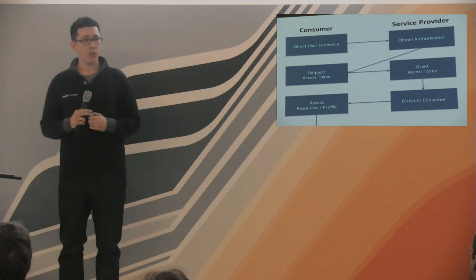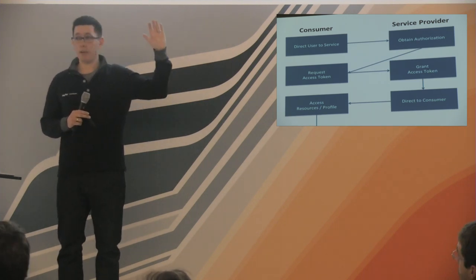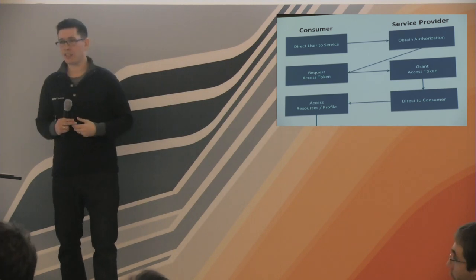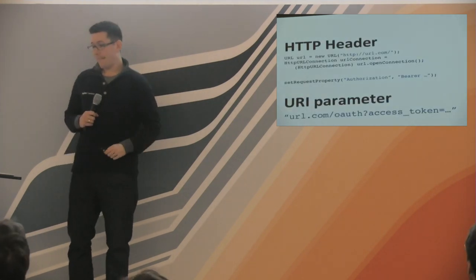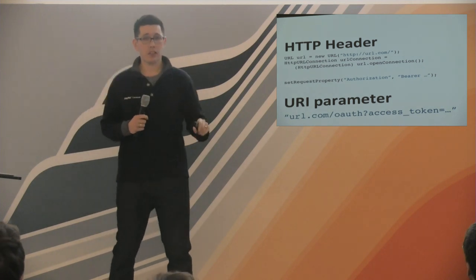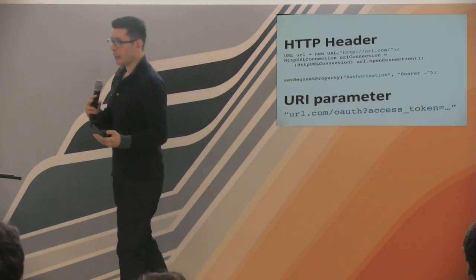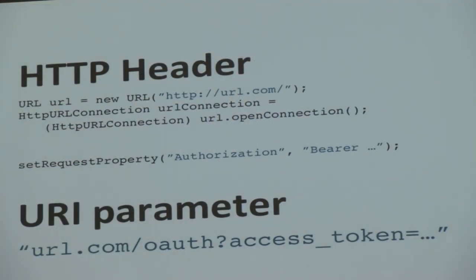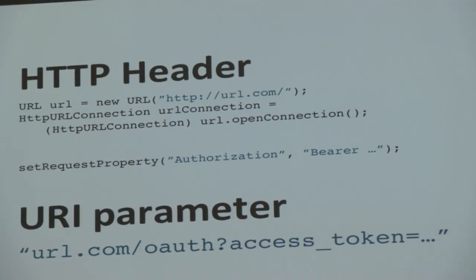OAuth2 on Android is actually super easy — you don't even need a library. You use a URL connection or Apache HTTP client, and you just set one request property: a header called 'Authorization' with the value 'Bearer' followed by your token, which is a random alphanumeric string. You can also provide it as a URI parameter. If you still don't feel comfortable, have a look at the Scribe library, which supports most standard providers out of the box.